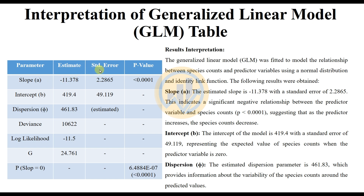The table columns include the parameter estimate, standard error, and p-value. The GLM was fitted to model the relationship between species count and predictor variables using a normal distribution and identity link function. The estimated slope is -11.378 with a standard error of 2.2865. This indicates a significant negative relationship between the predictor variable and species count. The p-value is less than 0.0001, suggesting that as the predictor increases, species count decreases.